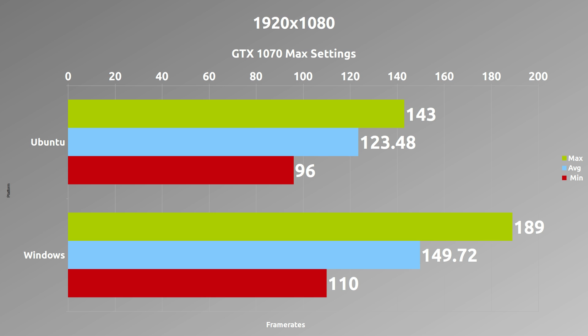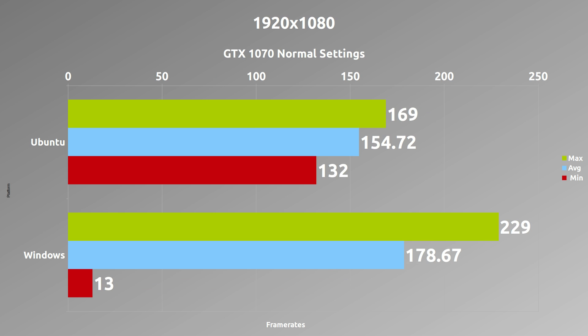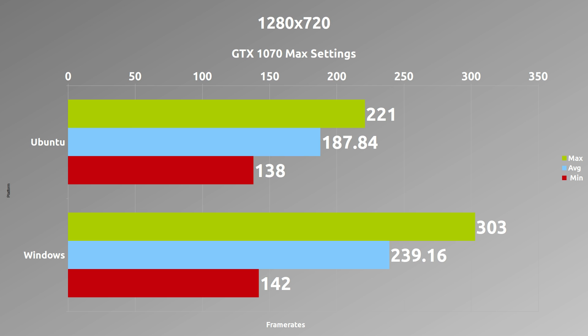The graphs show us slightly less performance on average compared to the Windows version. The most notable thing is that the frame rate maximum is higher on Windows than on Linux, so something is happening there with the overhead. You'll also notice the minimum on normal settings on Windows goes down really low every time I run it, which drops seriously. On 720p we see similar performance to 1080p maxed out — performance seems linear across all settings and resolutions, except with normal settings.